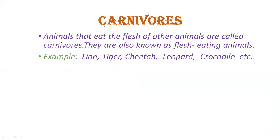Then carnivores. Animals that eat the flesh of other animals are called carnivores. Jo animals only flesh khaate hai, unka jo food hai, woh only flesh hai, woh unhain hum kehte hai carnivores. They are also known as flesh-eating animals. For example: lion, tiger, cheetah, leopard. Unhain hum wild animals kehte hai.